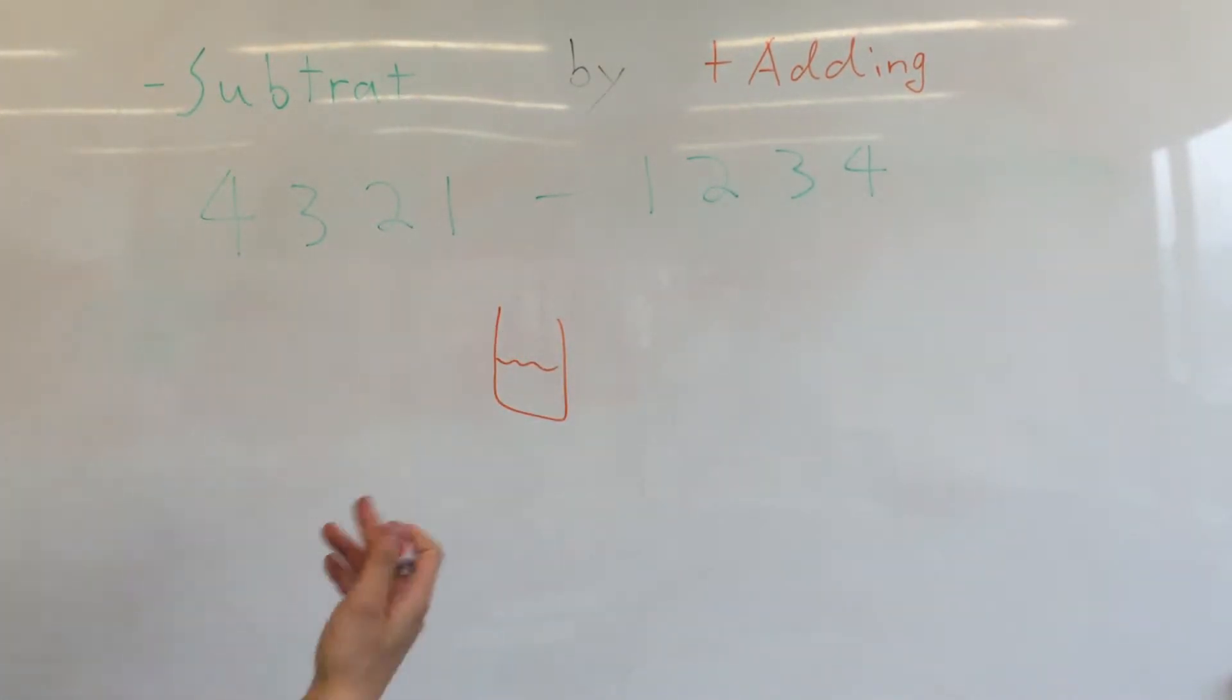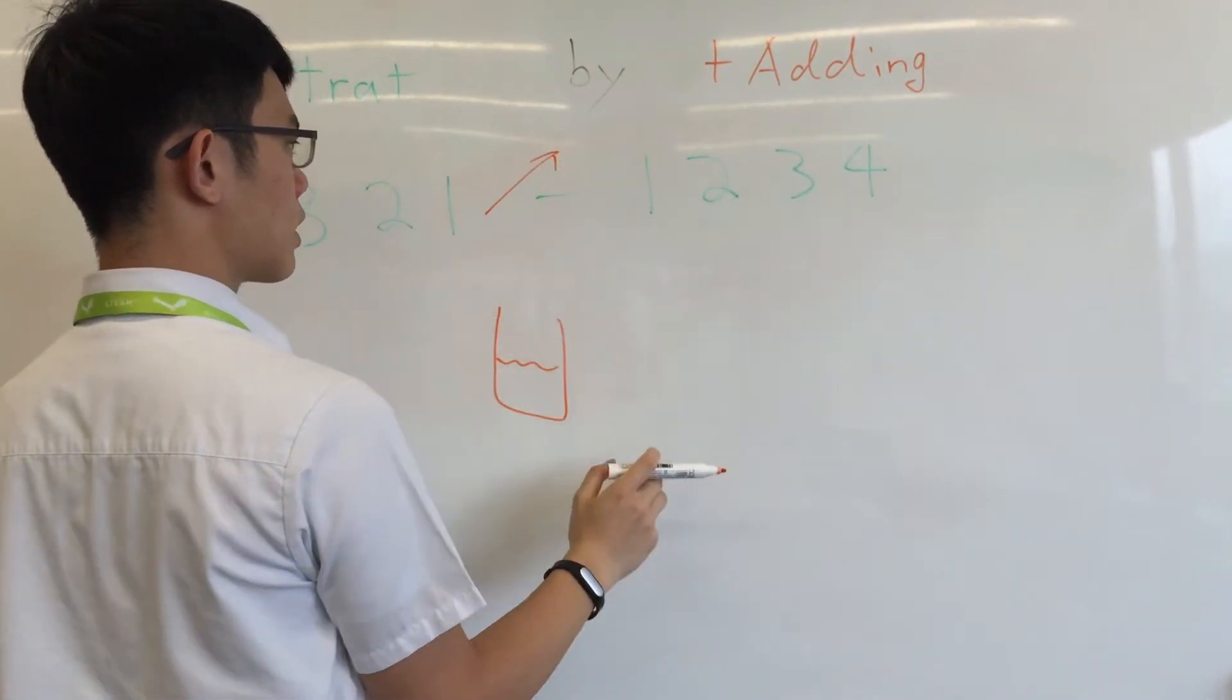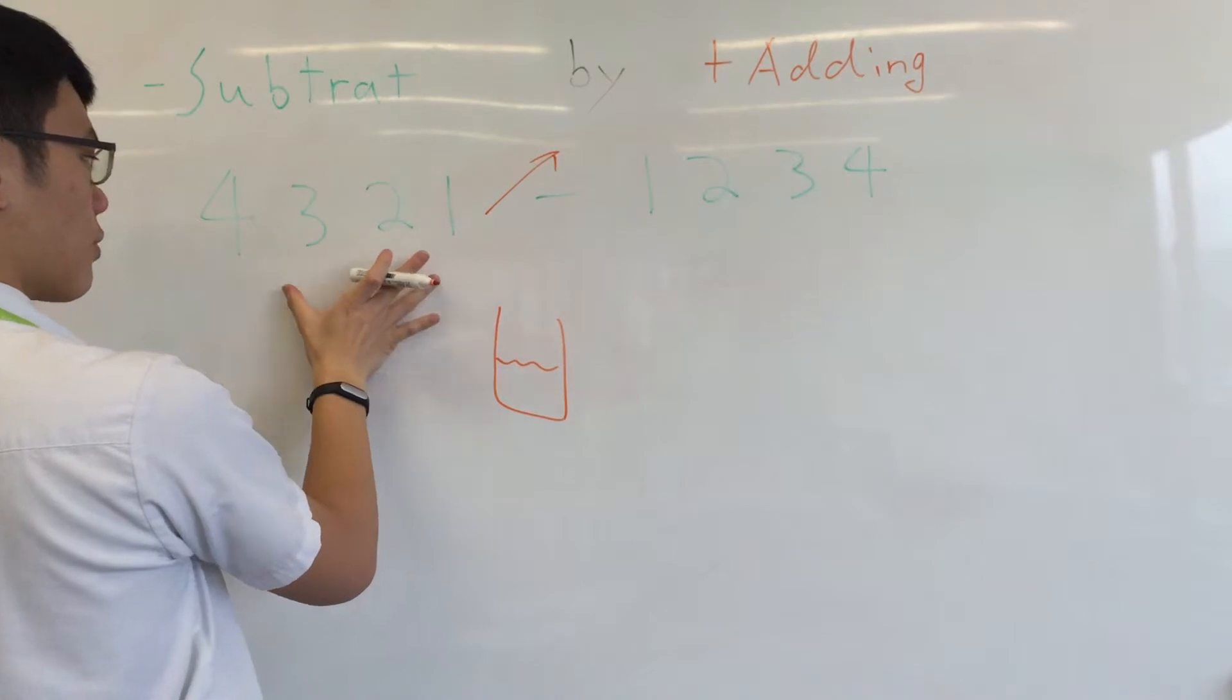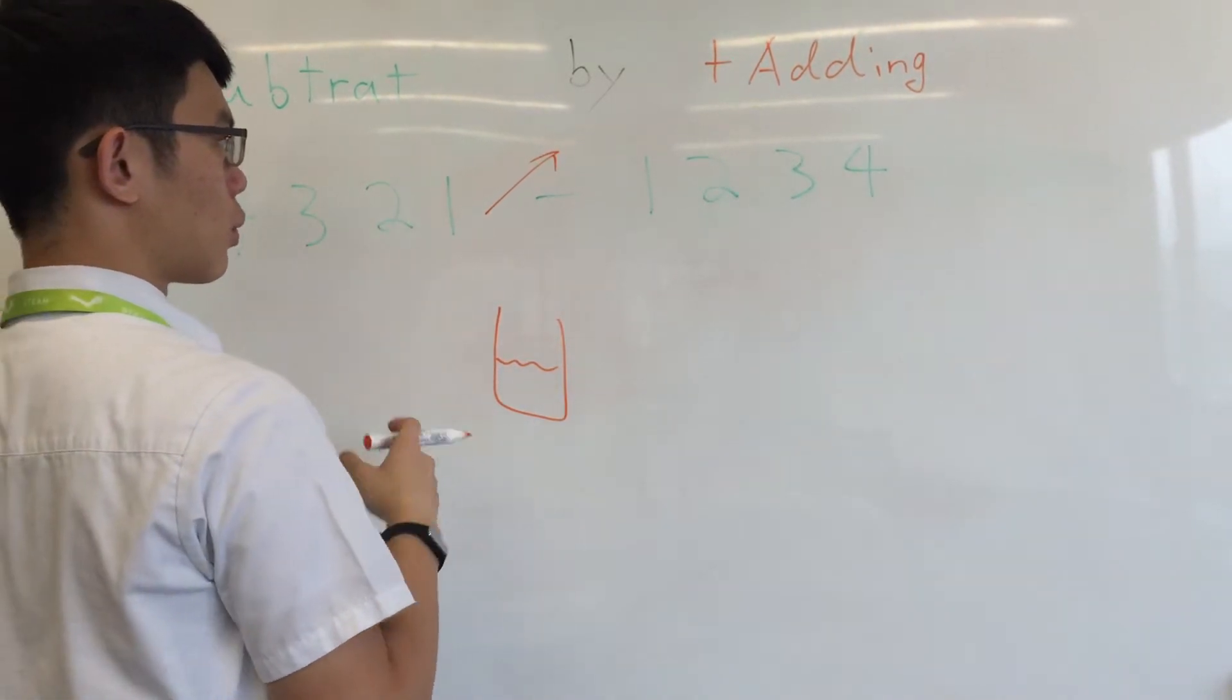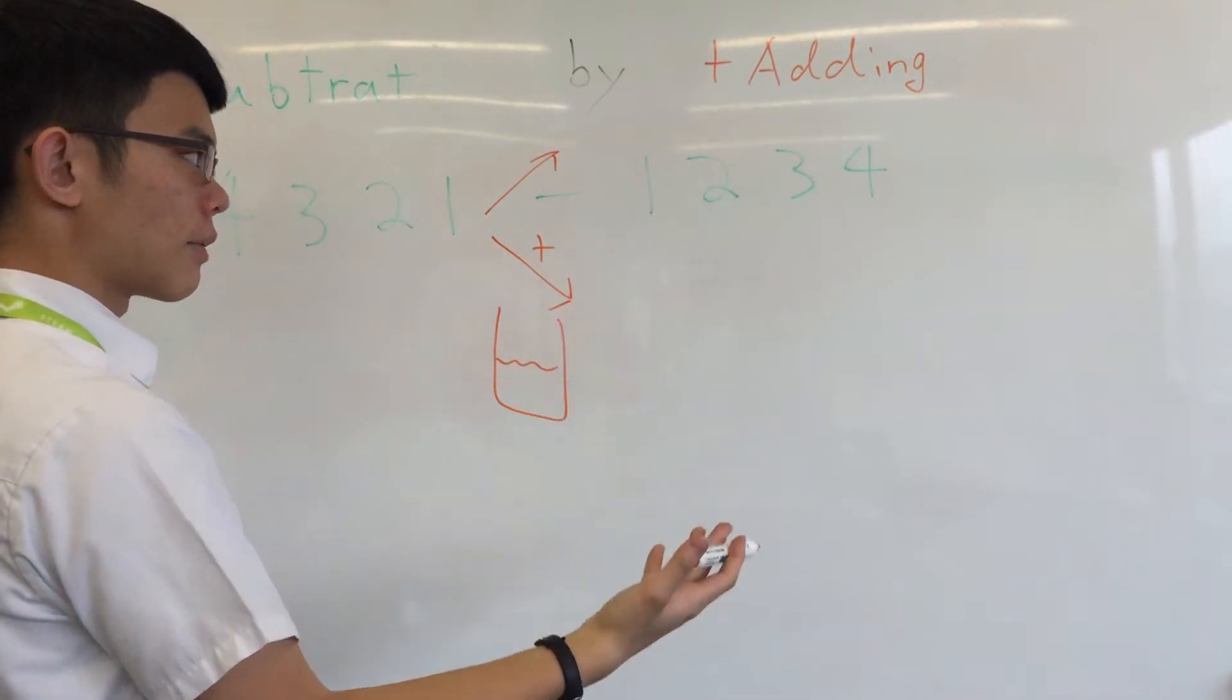So what you're doing here is sort of like when you minus, you're thinking of how many you're taking away from the original number. But the way we use here is sort of like thinking how much is left.